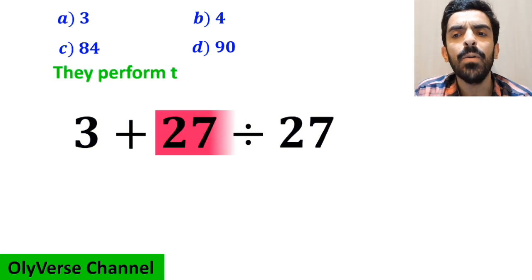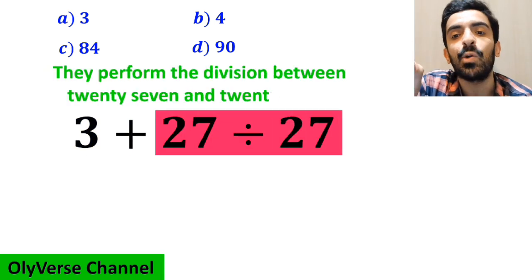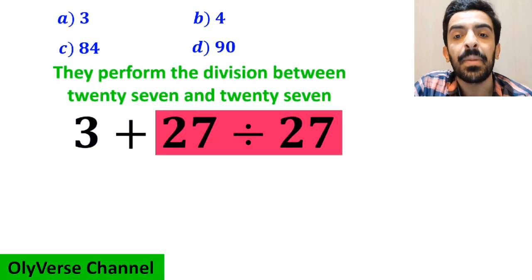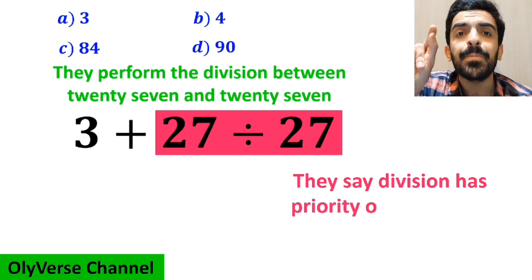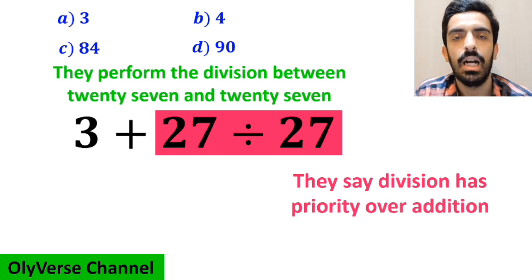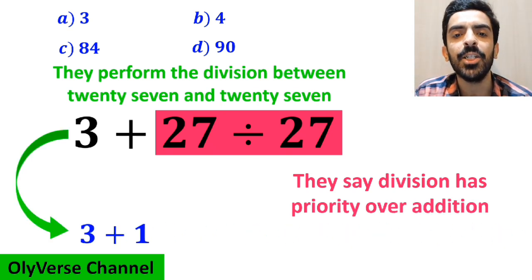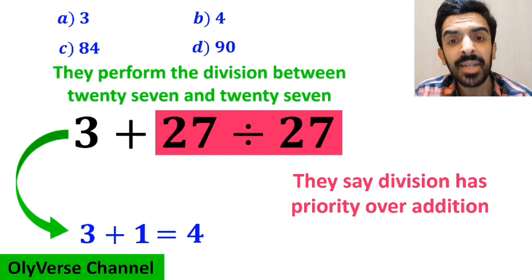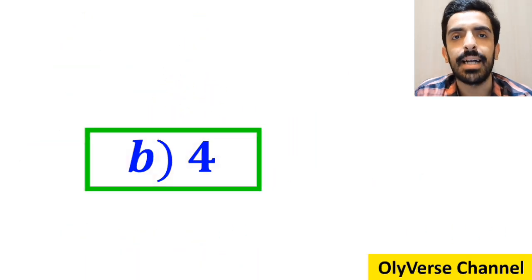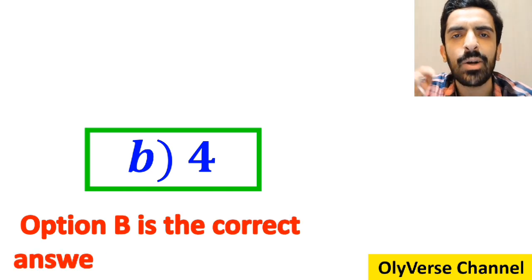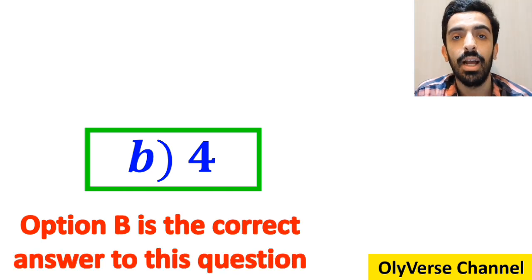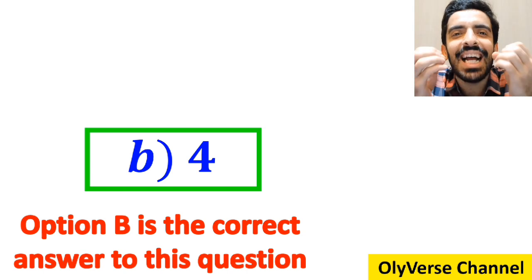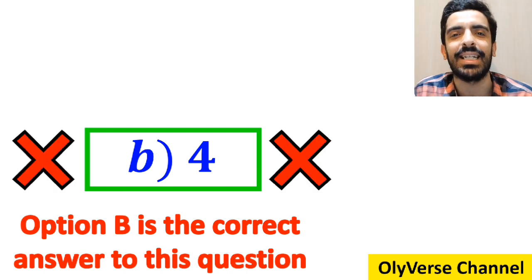In the next step, they perform the division between 27 and 27, because they say division has priority over addition. So they simplify the expression to 3 plus 1, which ultimately gives them the answer 4. And immediately they conclude that option B is the correct answer. But I have to say, we were tricked — it's not the correct answer to this question.